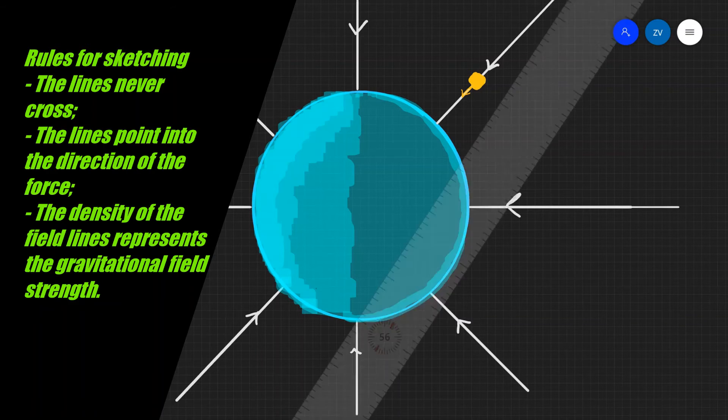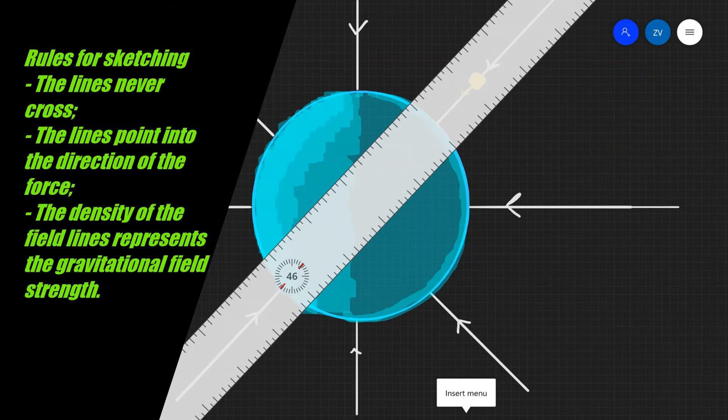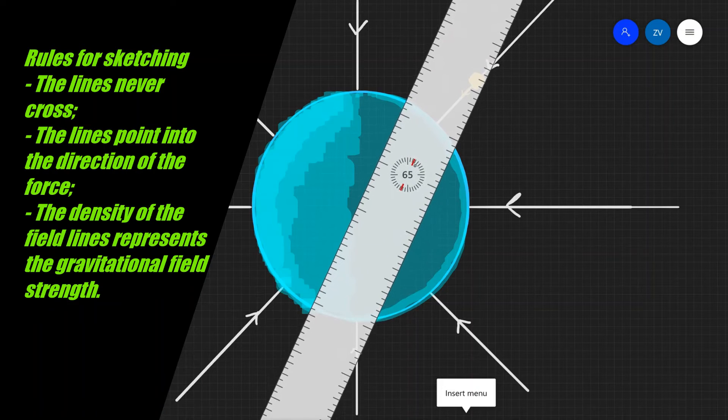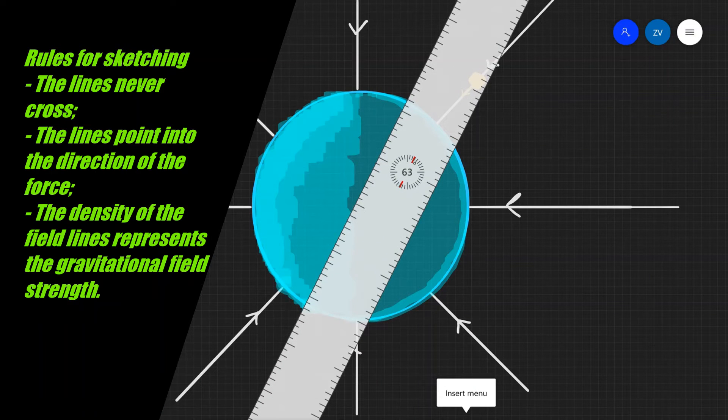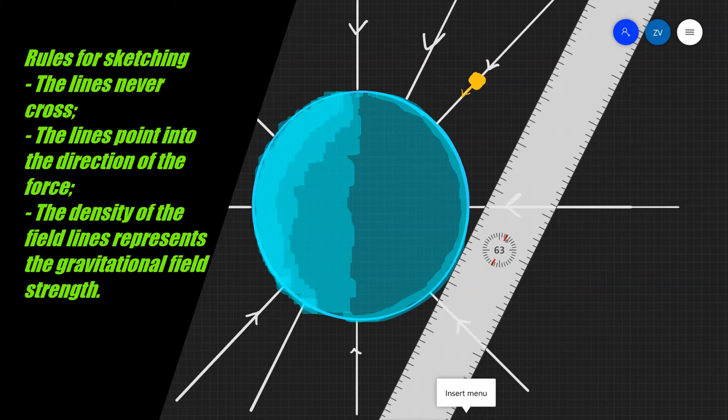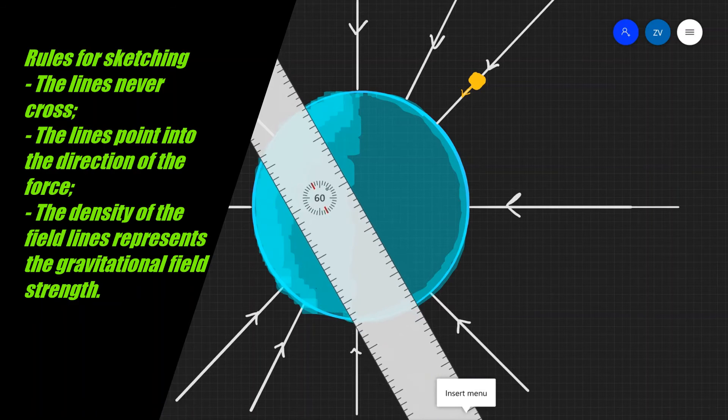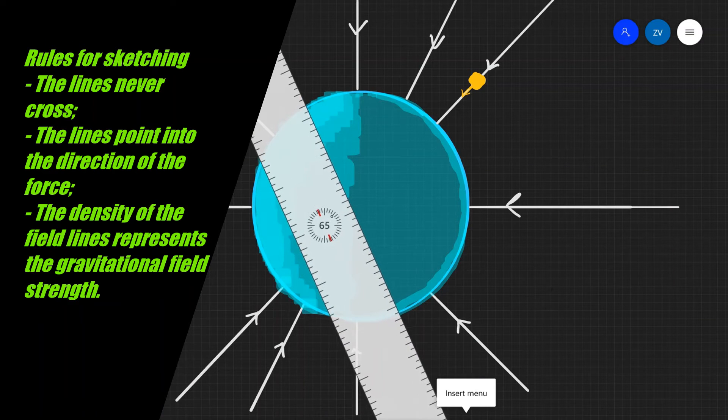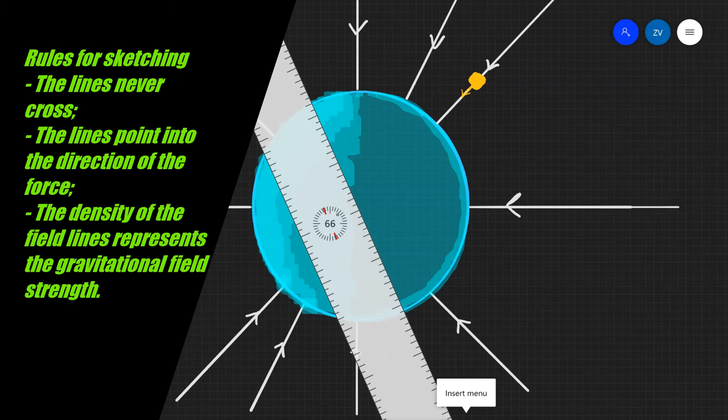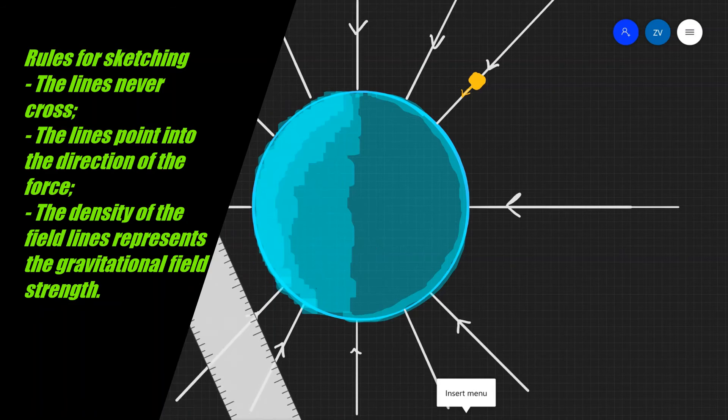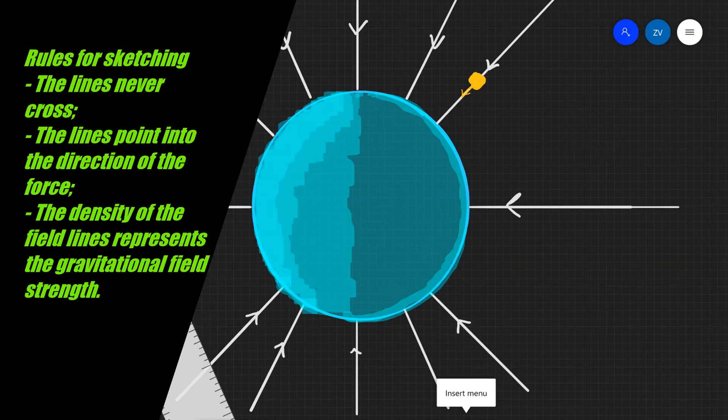For instance, if we had a lot more field lines, that would indicate a stronger gravitational field. We can add a couple more like so, and this will essentially make the field stronger. This is how we represent a stronger field. If I had twice as many lines, then the field would be twice as strong.